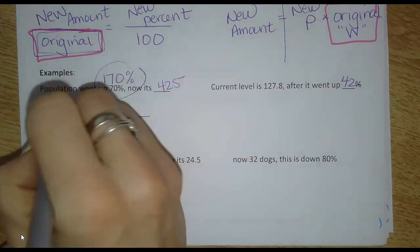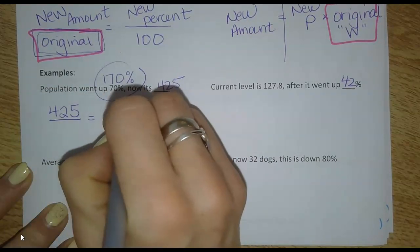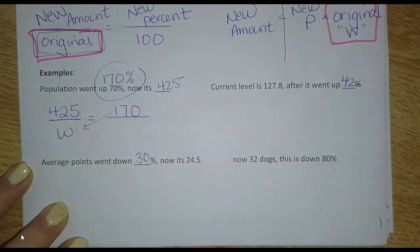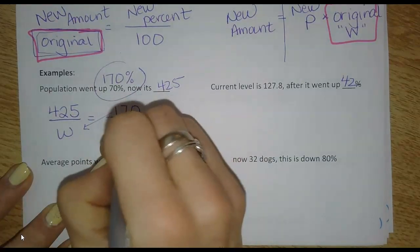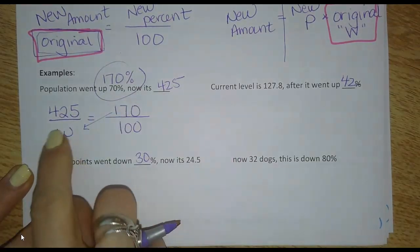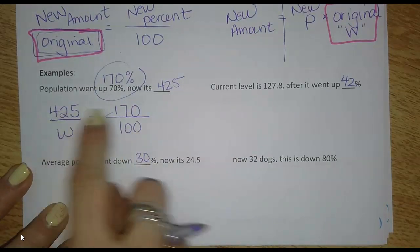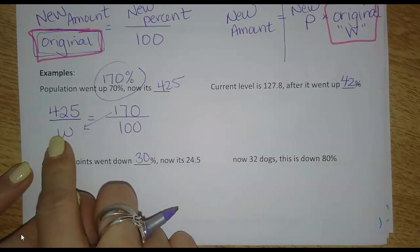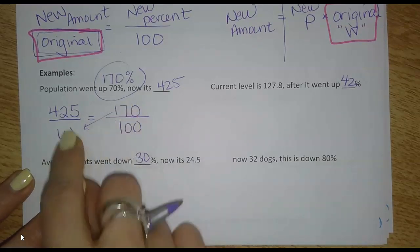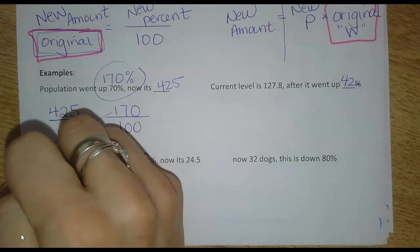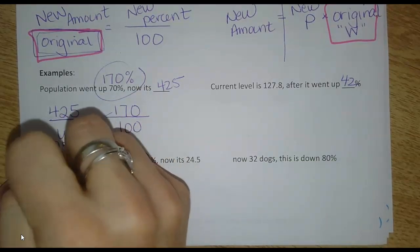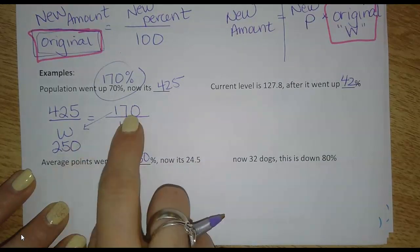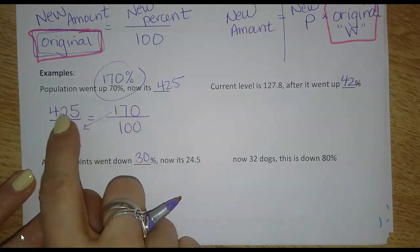So the new amount goes here. Now it's 425. That's 170% of what number? And that's what I'm looking for. And then the 100 goes here. So the original was 100%. Now it's this amount, which is 170%. Cross multiply to find the W. So I did that in my calculator, and I got that the W is 250. And that makes sense. It started at 250, went up 70%, and now it's at 425.